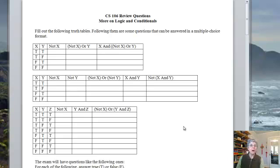We've already got a review on logic and conditionals. This is a second one. We're going to go over much the same material but also introduce some truth tables with three variables instead of two so you can see how that works.